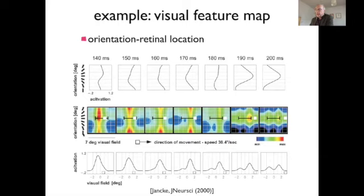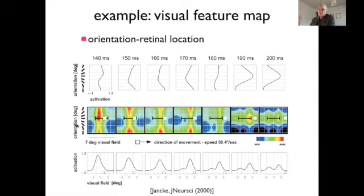For instance, this is a figure from a paper by Dirk Janke done early when we did this population code. He constructed representations that combined the orientation of a stimulus with the visual location of the stimulus. This is a two-dimensional field but not in a space with direct physical meaning — it combines orientation versus spatial location.